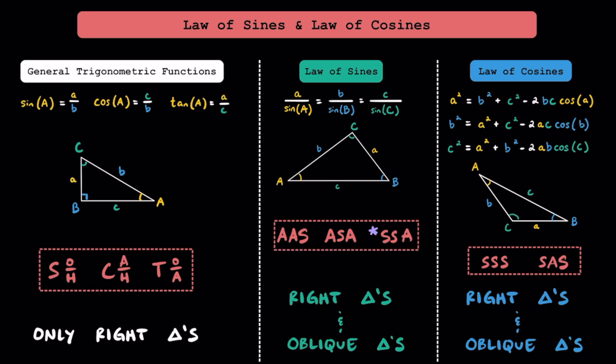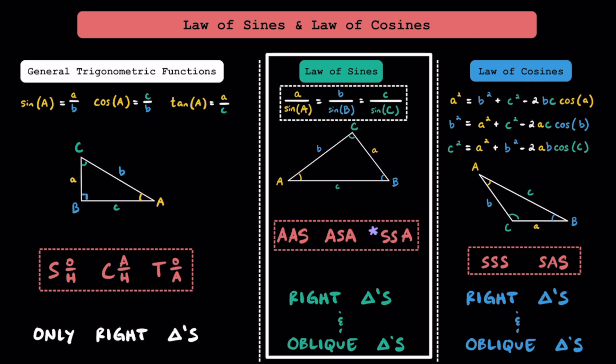That's where the law of sines and law of cosines comes in. These two laws will help us solve triangles that are not only right triangles, but also oblique ones as well. When I say oblique triangles, I just mean non-right triangles. Real quick, this is the formula that we'll use, but we'll go into more details about it in a little bit.